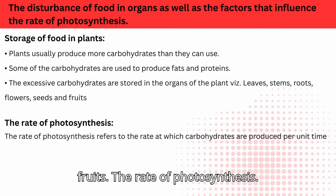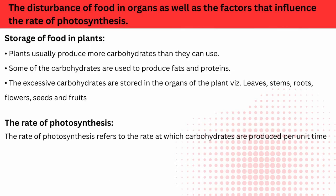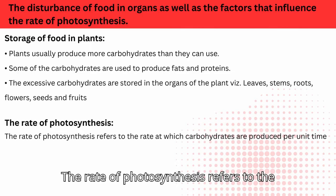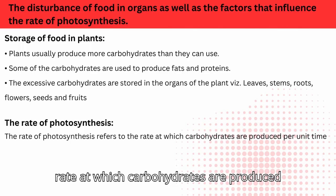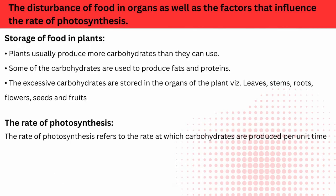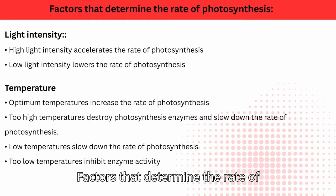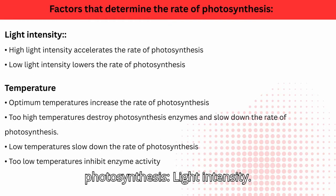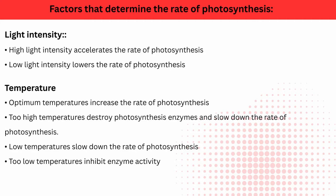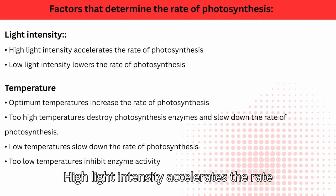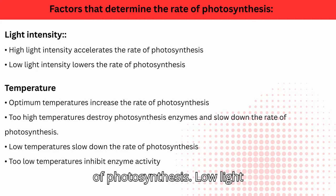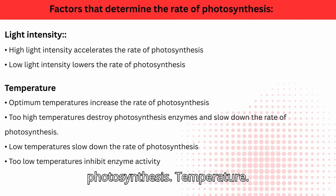The rate of photosynthesis refers to the rate at which carbohydrates are produced per unit time. Factors that determine the rate of photosynthesis: light intensity — high light intensity accelerates the rate of photosynthesis, while low light intensity lowers the rate of photosynthesis.